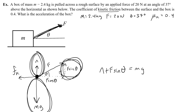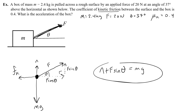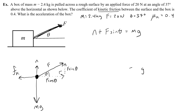We know the y forces are balanced because otherwise the box would accelerate up or down. So in future problems, we'll just start directly with that equation relating all up and down forces. Back to the question: we're trying to figure out the normal force. To find it, I subtract F sine theta from both sides, giving: normal force equals mg minus F sine theta. That makes sense because you're pulling up on the box, so the surface doesn't need to support as much weight.